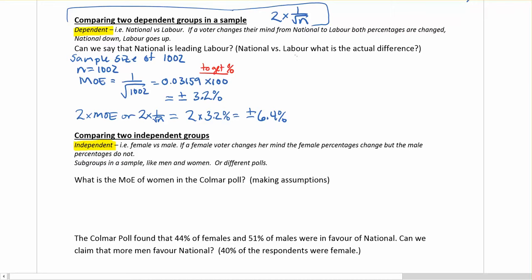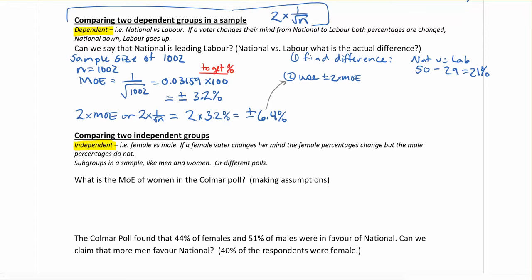First step that we're going to do is find the actual difference. Here we have national versus labour, so that's 50 minus 29, and we say that there's a difference of 21%. Our second step, we're going to use the plus or minus 2 times the MOE, which is this one, to compare our difference.